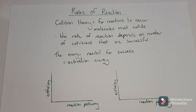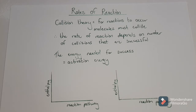The rates of reaction always depend on what we call collision theory. Collision theory says that in order for a reaction to take place, the molecules must collide. And when they collide, they must collide with the right amount of energy in the right orientation. So the rate of reaction will depend on the number of collisions that are successful — the more successful collisions we have, the faster the rate of reaction.